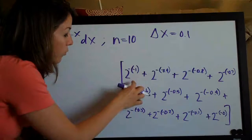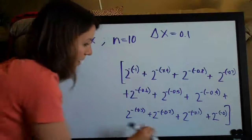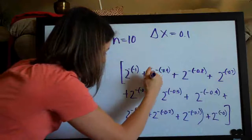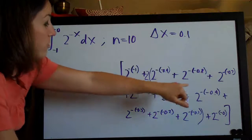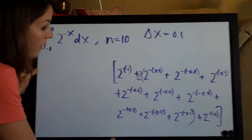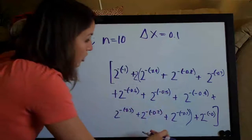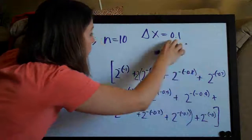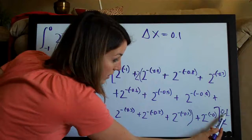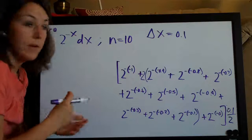So we multiply the first term and the last term normally, but all the middle terms get multiplied by two. Rather than multiplying each middle term by two separately, we can just factor a 2 out in front of that group. Then outside of the brackets, we always multiply by delta x over 2 — so in our case 0.1 over 2. The 2 always stays the same and whatever your delta x is, that's what you plug in. That is the trapezoidal rule formula applied to our problem.